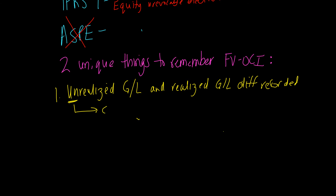So as long as we're continuing to hold the investment and the valuation is fluctuating, we're recording that change in OCI. Now when we actually sell the investment and we realize a gain or a loss, the accounting changes. We'll talk about that in the second unique characteristic of OCI.